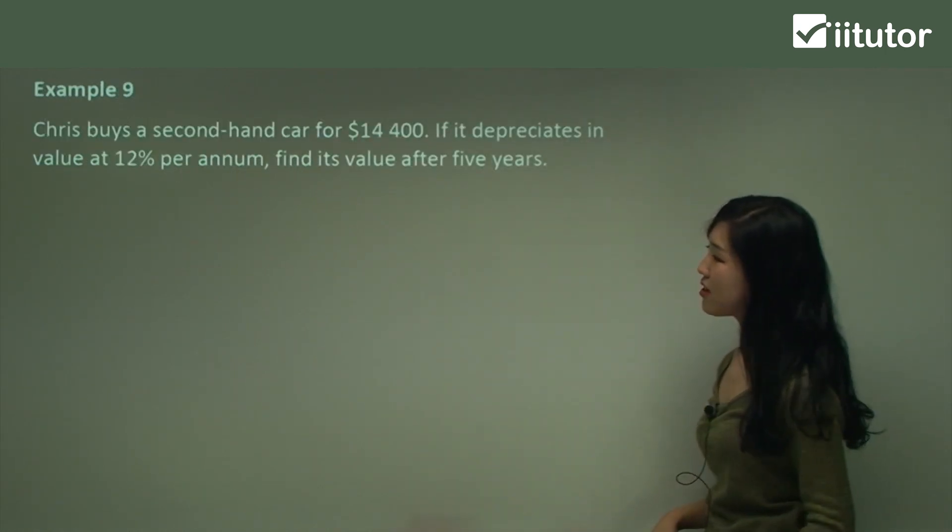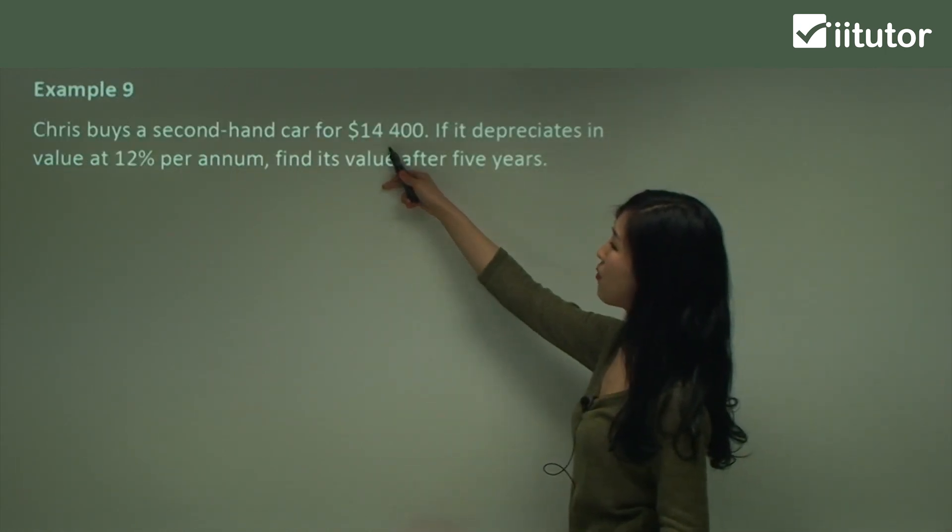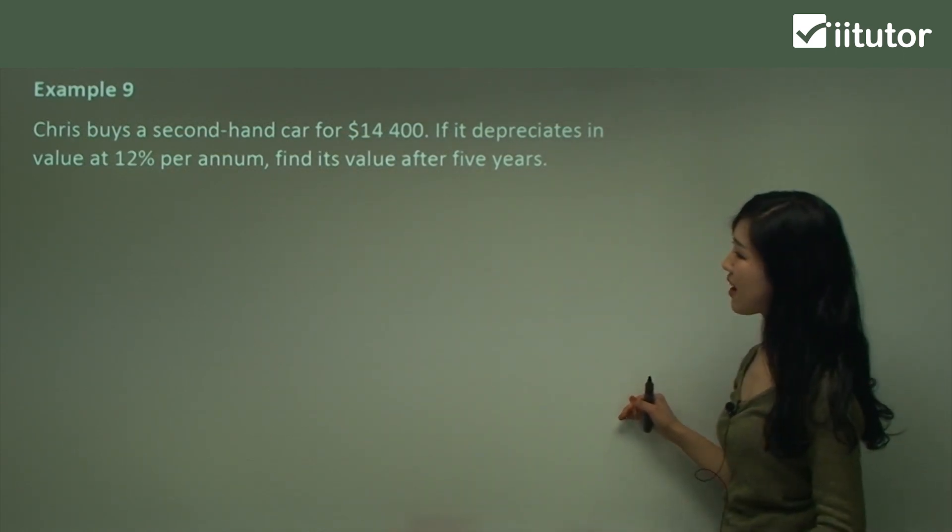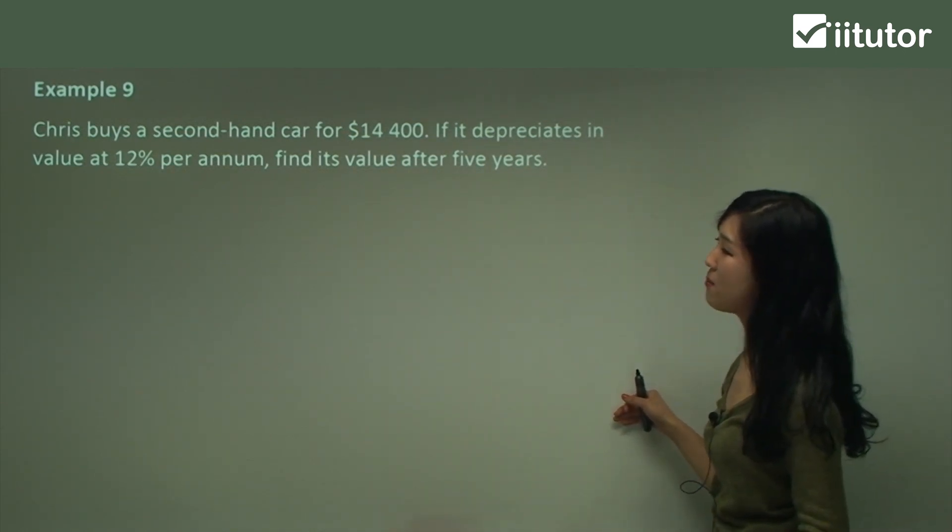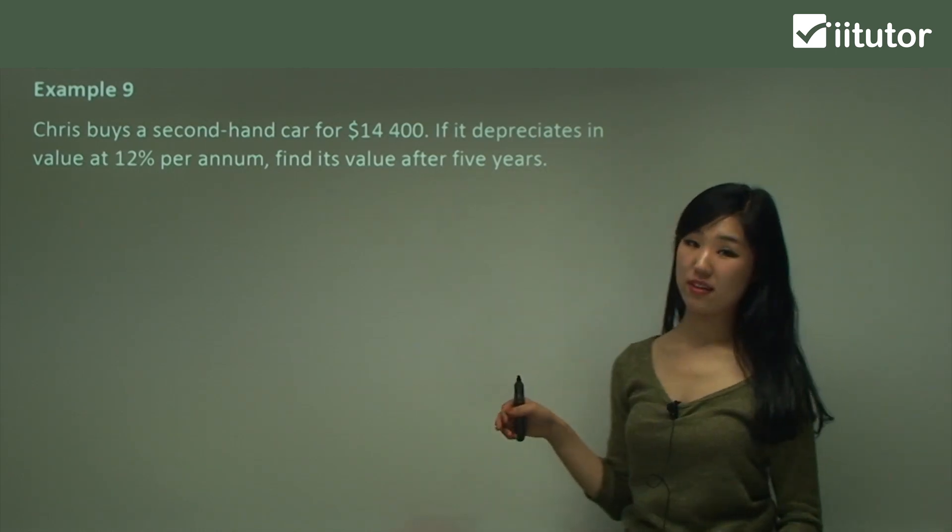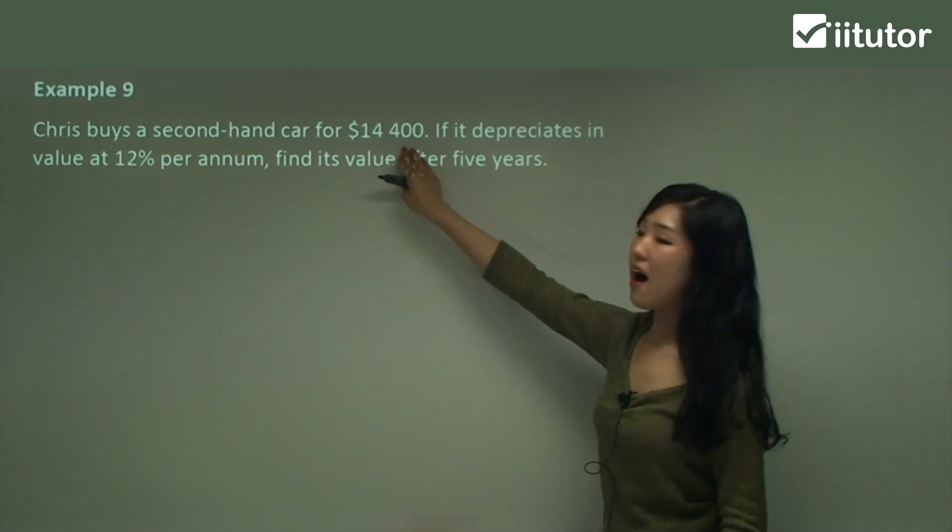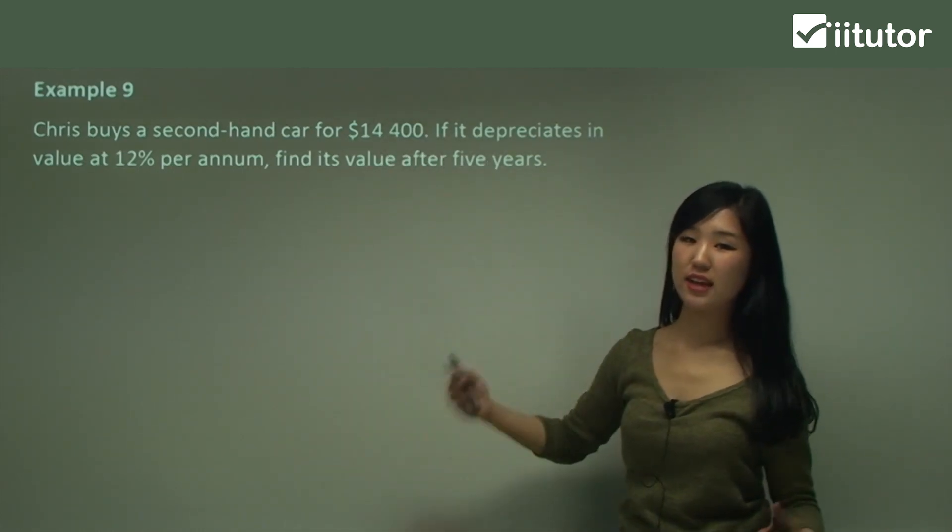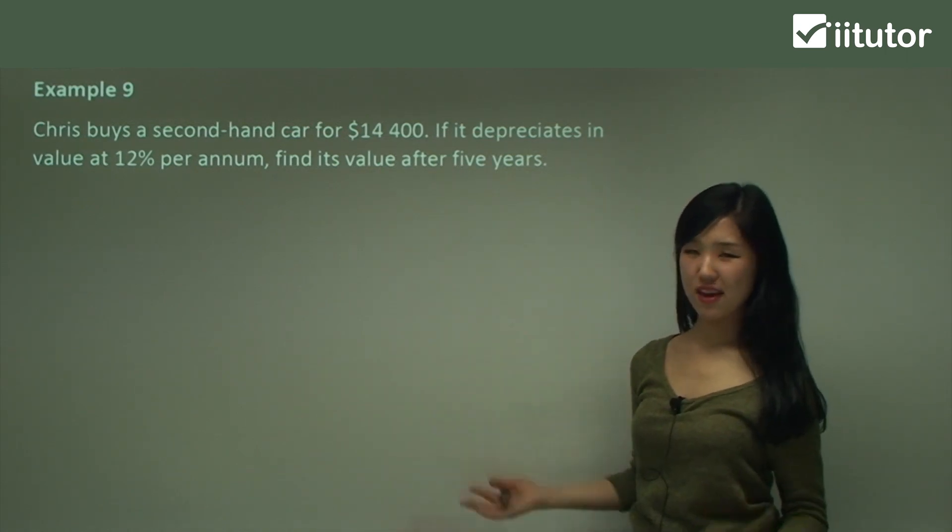Example 9 says Chris buys a second-hand car for $14,400. If it depreciates in value at 12% per annum, find its value after five years. So this car, the value of it will decrease as time goes by because it's getting older.